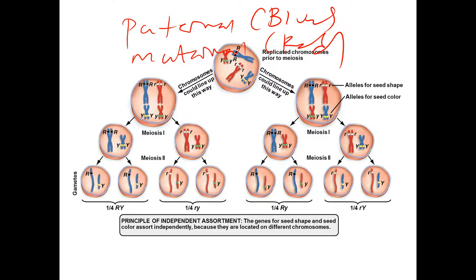In terms of independent assortment, you could have both paternal chromosomes on the left side and both maternal chromosomes on the right. In that case, maternal chromosomes pass to the daughter cell on the right, paternal to the daughter cell on the left at the end of meiosis. You can also have a different situation where one paternal and one maternal chromosome are on the left side, creating different combinations. This alone can lead to genetic variation.